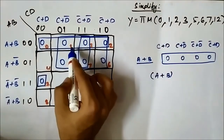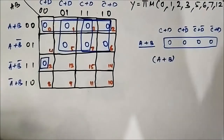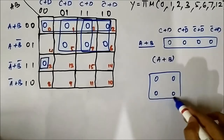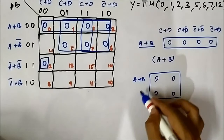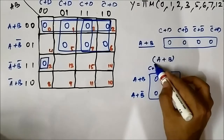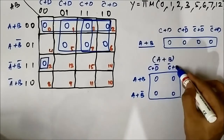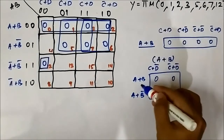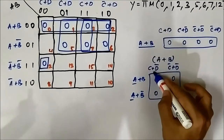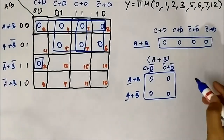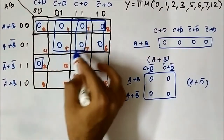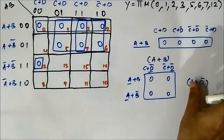Next, the quad involving cells 1, 3, 5, 7: the horizontal components are A or B and A or B bar. The vertical components are C or D bar and C bar or D bar. In the horizontal side we have A common, and in the vertical side we have D bar common. So the common set of variables is A or D bar.